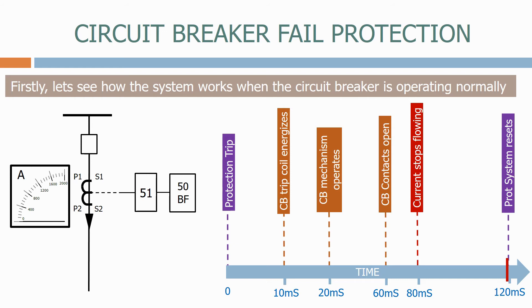After a short time delay, we reset the protection system and the whole system goes back to its original state. This is the normal fault clearance sequence for a healthy circuit breaker.